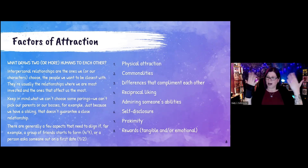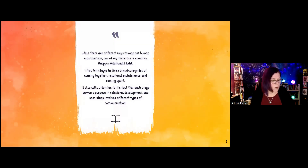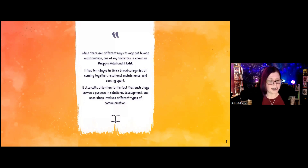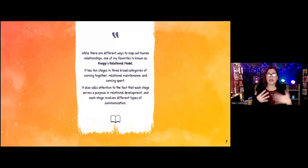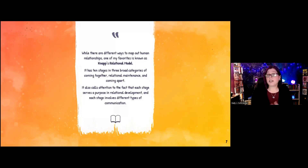So absorb the foundation — that's a lot to take in to begin — because what I specifically want to discuss is Knapp's relational model. He puts them into 10 stages that are in three broad categories, and he really calls attention to the fact that each stage serves a purpose and involves a different type of communication.